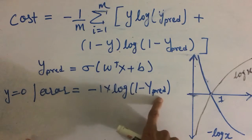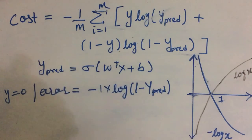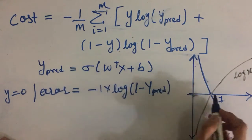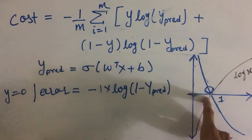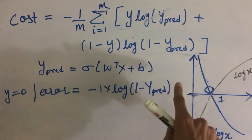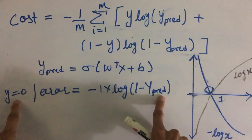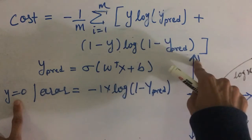Let us say if ypred is close to 0, which is close to our actual prediction, then 1 minus ypred will be close to 1, and any value of logarithm which is close to 1 has less value, meaning our error will be lesser. And if ypred is closer to 1, which is far from our actual prediction, then 1 minus ypred will be closer to 0 here and our error will be large.